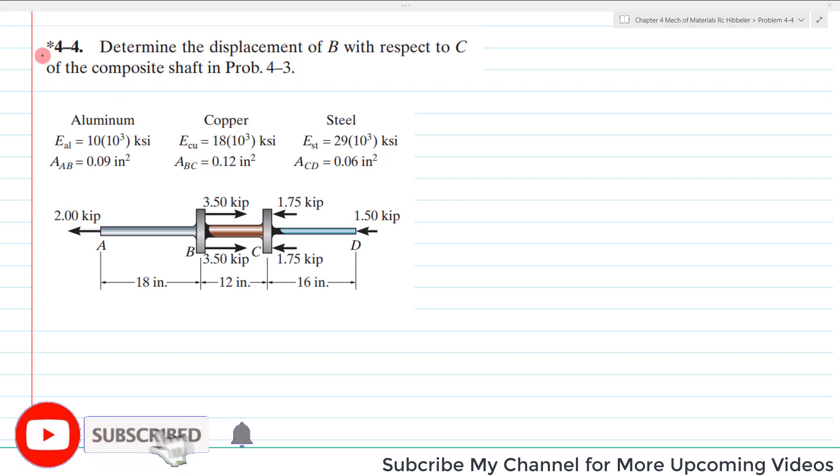Welcome back to Problem 4-4. The problem statement is: determine the displacement of B with respect to C of the composite shaft as in Problem 4-3. This is a composite shaft with an aluminum portion, a copper portion, and steel. The areas are given respectively, and the loading is also shown.